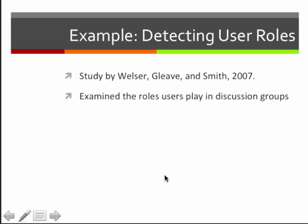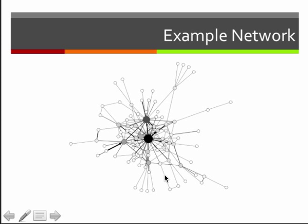The next example is a study by Wessler, Gleeve, and Smith — and Smith here is Mark Smith, one of the creators of the NodeXL program for visualization. They looked at the roles that users play in discussion groups. Here's a network of a discussion board: nodes are people, edges indicate that people have responded to one another, and node size reflects out-degree. We can see some nodes with high out-degree in the center and low out-degree on the outside. The researchers broke this network down into 1.5-degree egocentric networks for every node and looked at those together.